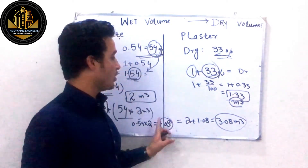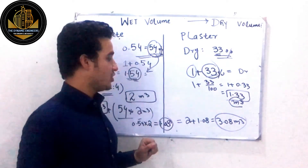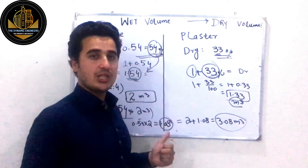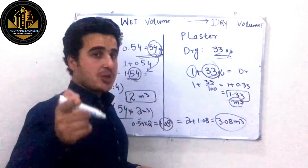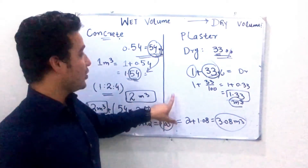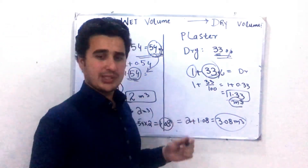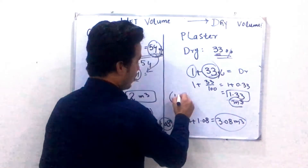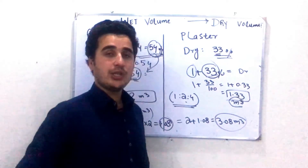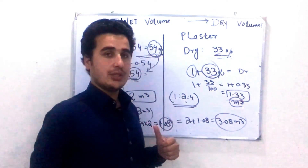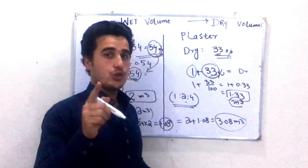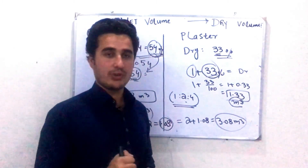This is how you calculate the dry volume of concrete — a very simple conversion to keep in mind. In an upcoming video, I will talk about how to convert this volume into different components, such as for a 1:2:4 mix ratio, how to calculate the different components of concrete. Subscribe to our channel so you don't miss those videos. See you in the next one.